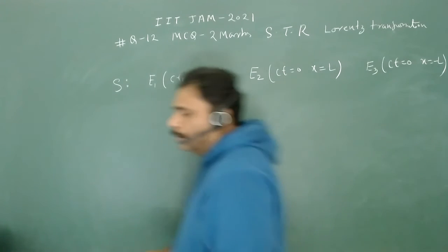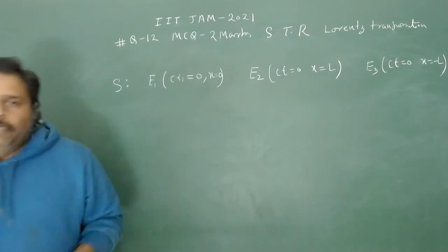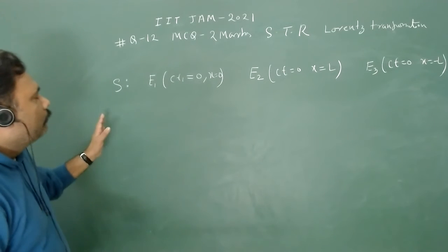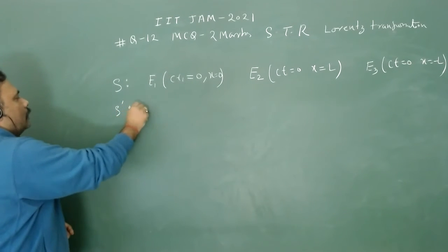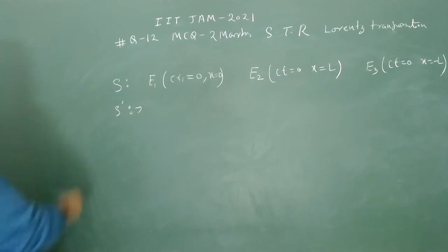What we have to calculate is what will be the time coordinate from S' frame. Obviously, we should remember that S' is moving with velocity v with respect to S, and this is moving along the x-axis. So this is the convention we are going to use.